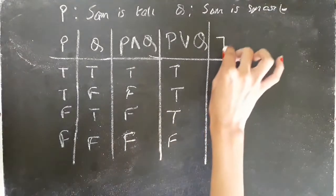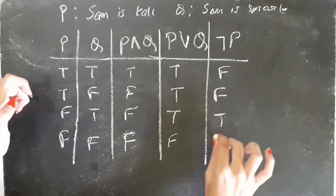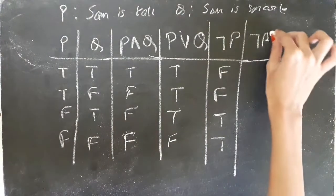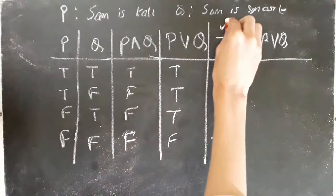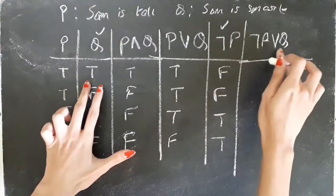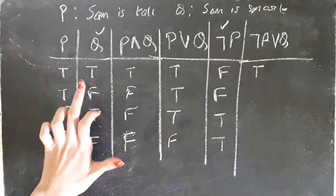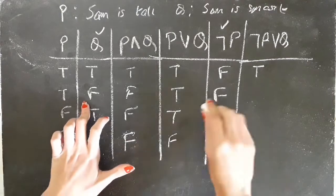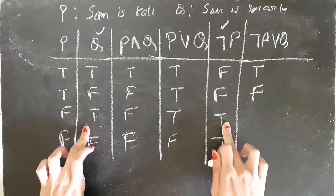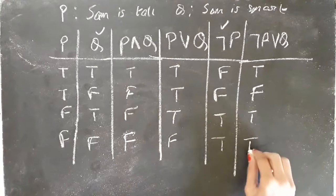For the negation of P, just reverse the truth values, giving F, F, T, T. To find the truth value of NOT P or Q, we consider the values of ¬P and Q together. In the first case T and F — the disjunction is satisfied, so it is true. In the second case both are false, so it is false. In the third case both are true, so it is true. In the fourth case this is false but Q is true, so it is true.